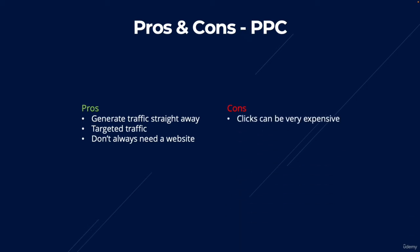Moving on to the cons. Clicks can be very expensive — depending on the keywords and areas you're targeting, bidding on SEO-related keywords like 'SEO Agency London' could cost £20 a click, which is absolutely insane, especially since SEO is notoriously the most expensive category to bid on. The second con is that it can be harder to justify a positive ROI, because you'll generate revenue from affiliate sales but then have to deduct a massive investment in clicks, which eats into your margin.